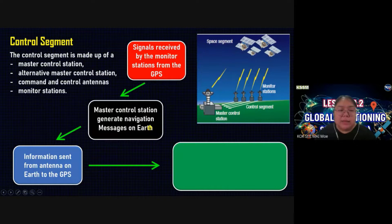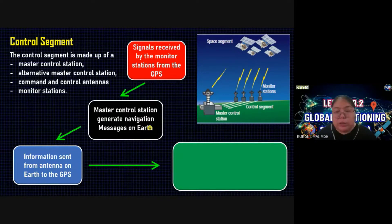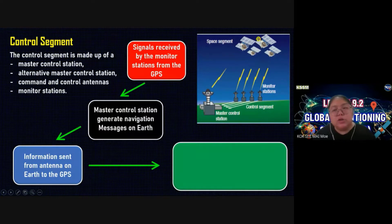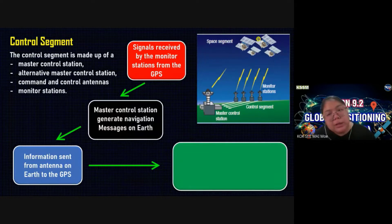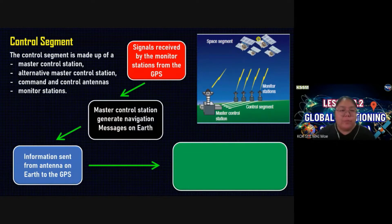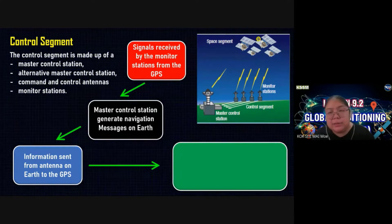After the information is generated on the Earth by the master control, it is sent from the antenna on the Earth to the GPS. So the message is generated on Earth first, then sent through the control segment via the antenna to the GPS. If not, you cannot receive anything. From the Earth, you get all the info, and from the antenna to Earth, you then send to the GPS.